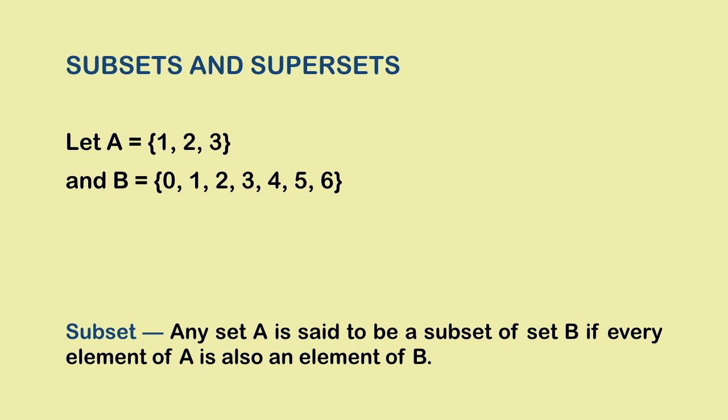Take a look at these two sets. A has elements 1, 2 and 3 and B has 0, 1, 2, 3, 4, 5 and 6.